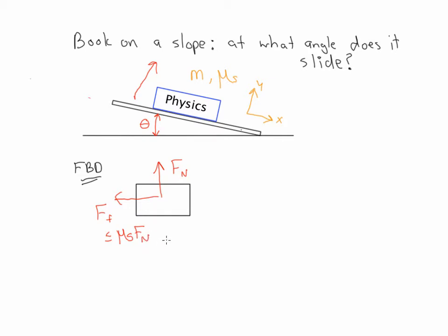Static friction is a passive force, so that's where the less than or equal to comes from. Finally, we have the weight, pointing off at some direction theta—it's the same angle theta as above. The weight is just equal to the mass of the book times gravity.